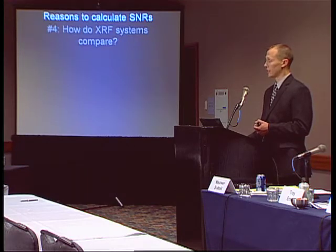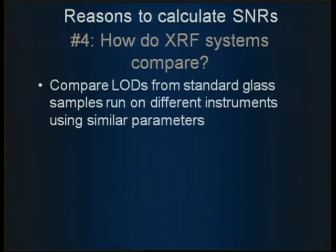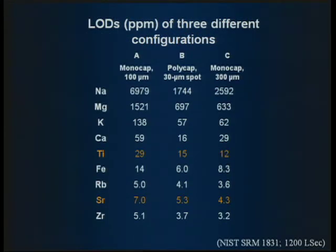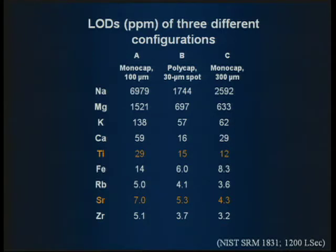Once you have the signal-to-noise ratios, you can compare XRF systems — for purchasing decisions, troubleshooting, or improving your methodology. You run the standard glass samples, calculate your LODs, and compare them from one system to another. This slide shows a comparison of three different configurations collecting from SRM 1831 for 1200 live seconds: a 100 micron mono-cap, a poly-cap, and a 300 micron mono-cap. They all follow the same general trend of LODs going from thousands down to single digits, but they differ from one system to another. Titanium and strontium are highlighted for comparison on the actual spectra.